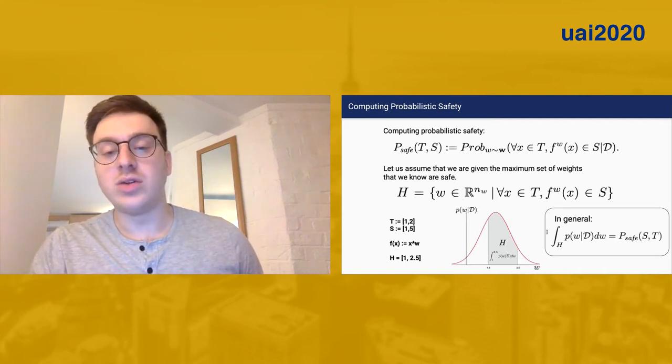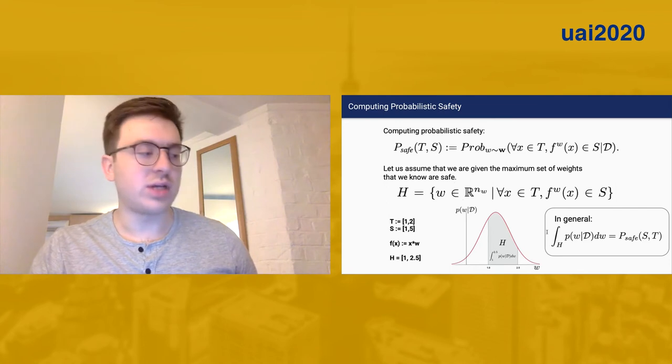So what's the probability of this occurring under this probability distribution? Well, simply all we need to do is integrate over this safe set of weights H, and we get the probability of safety for our entire system.